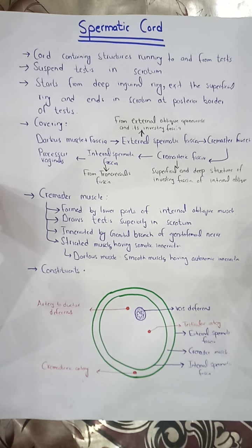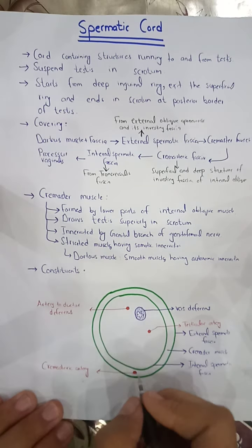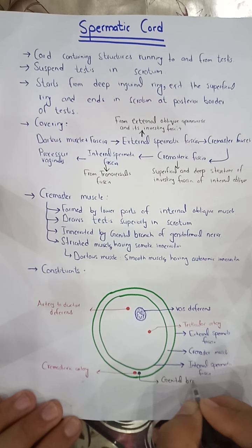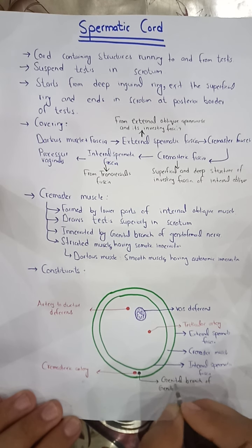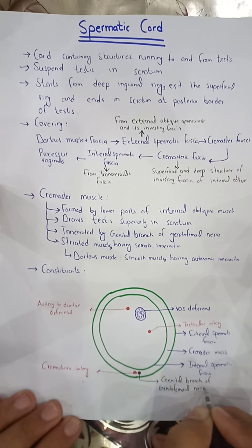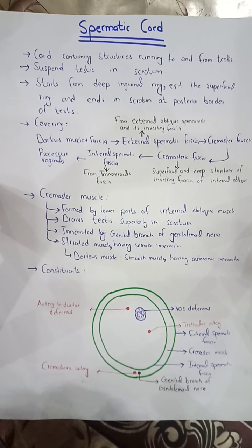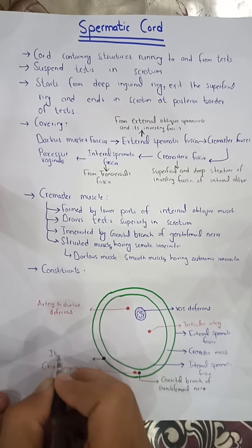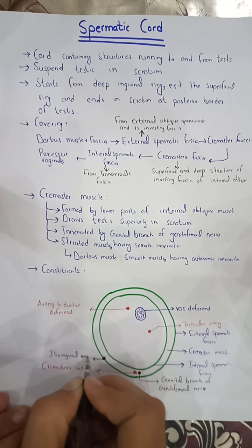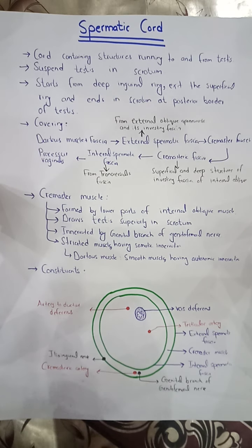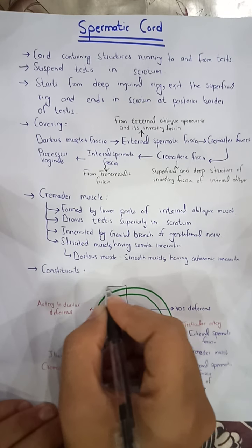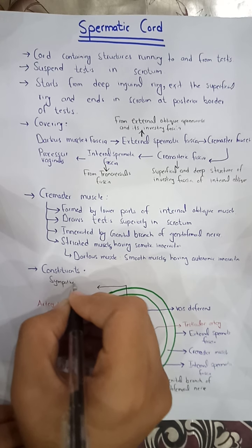Regarding the nerves: the first nerve is the genital branch of the genitofemoral nerve, which runs with the cremasteric artery to the cremaster muscle. The second nerve is the ilio-inguinal nerve, which runs on the border of the cord. The third is the sympathetic plexus, which runs around the arteries.